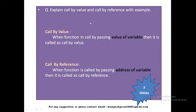Let us begin with call by value. When a function is called by passing the value of a variable, then it is called call by value. The key difference to remember is: in case of call by value, the value of the variable is passed, and in case of call by reference, the address of the variable is passed. This is the basic difference between call by value and call by reference.